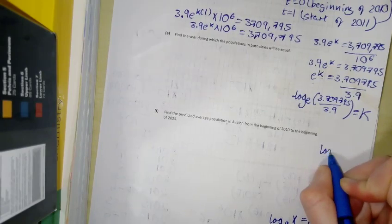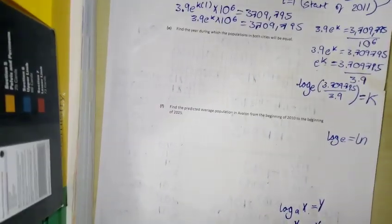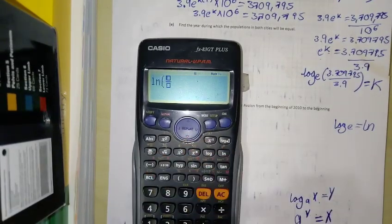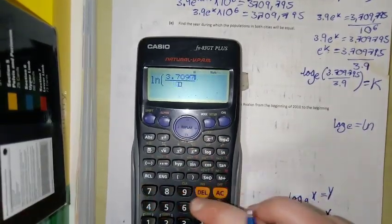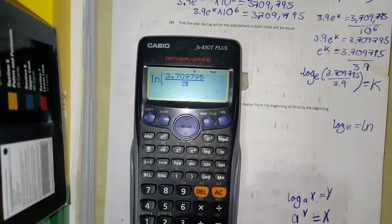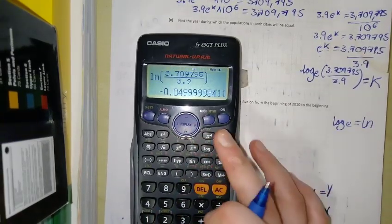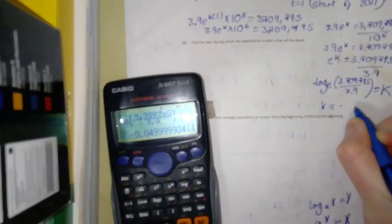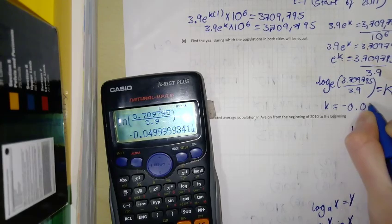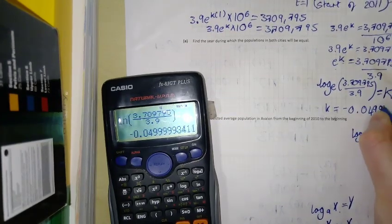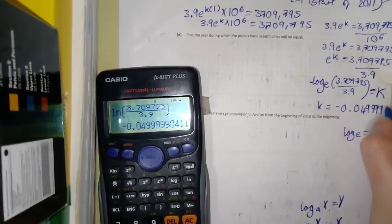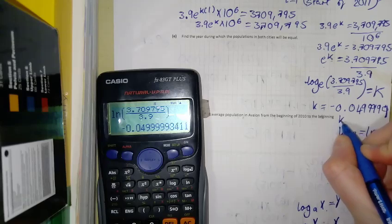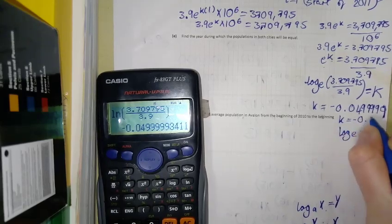And log of e, we can also write that as a natural log. So I'm going to work that out. So 3.709795 over 3.9, and then we get that K is equal to minus 0.04999999. And if we were to round that to two decimal places, K is equal to minus 0.05.